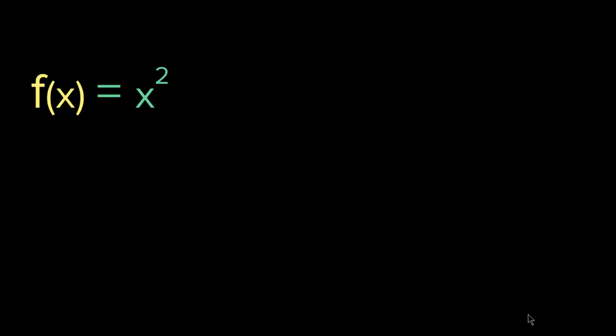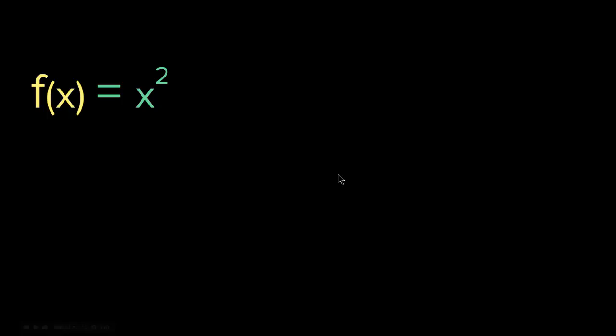Let me give you another example. Let's say f(x) equals x squared. We know from the power rule that when you want to find the derivative, you bring the exponent down, so it becomes 2x, and you reduce the power by 1. So the derivative is 2x. Let's see if we use the product rule, we will get the same result — we should get 2x.